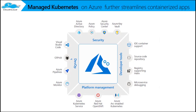For Azure Kubernetes environments, there are several things to consider. Azure Active Directory, Azure Policy, Azure Security Center — all security-related enhancements. You can even integrate with Azure Key Vault, which is very secure, so whenever there are code changes you can integrate with container support. There is source code repository and registry supporting Helm. Nowadays most actions are better bundled with Helm charts.